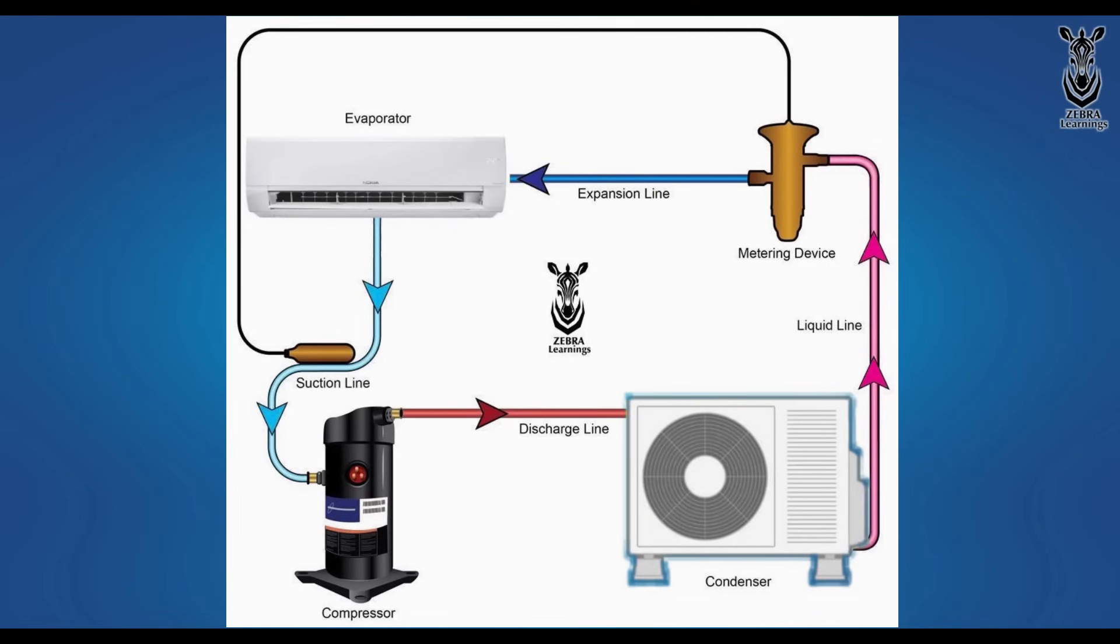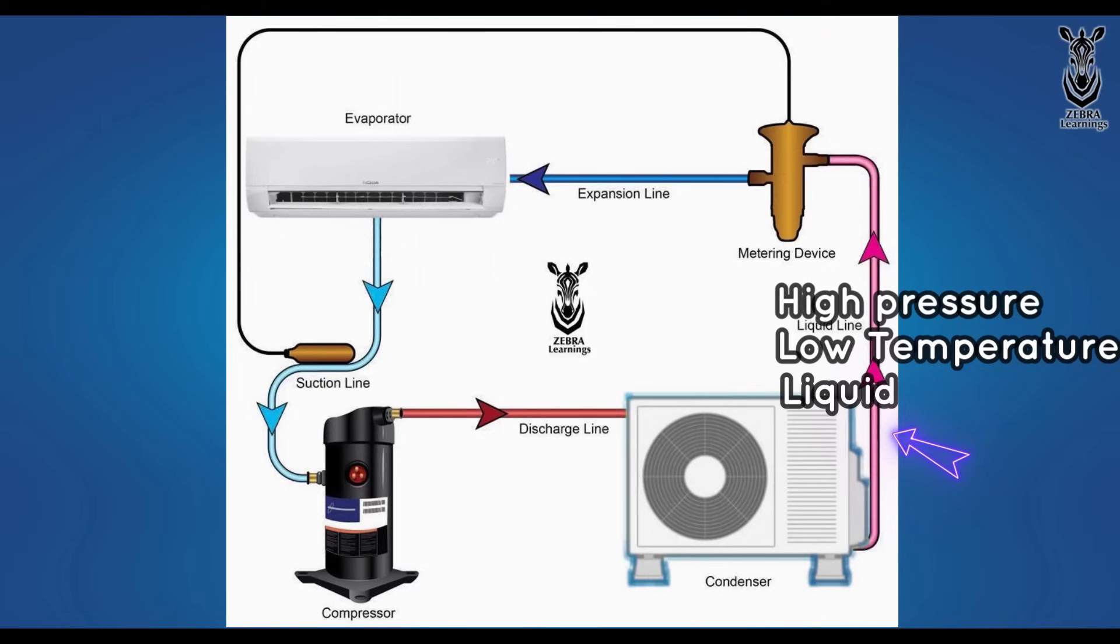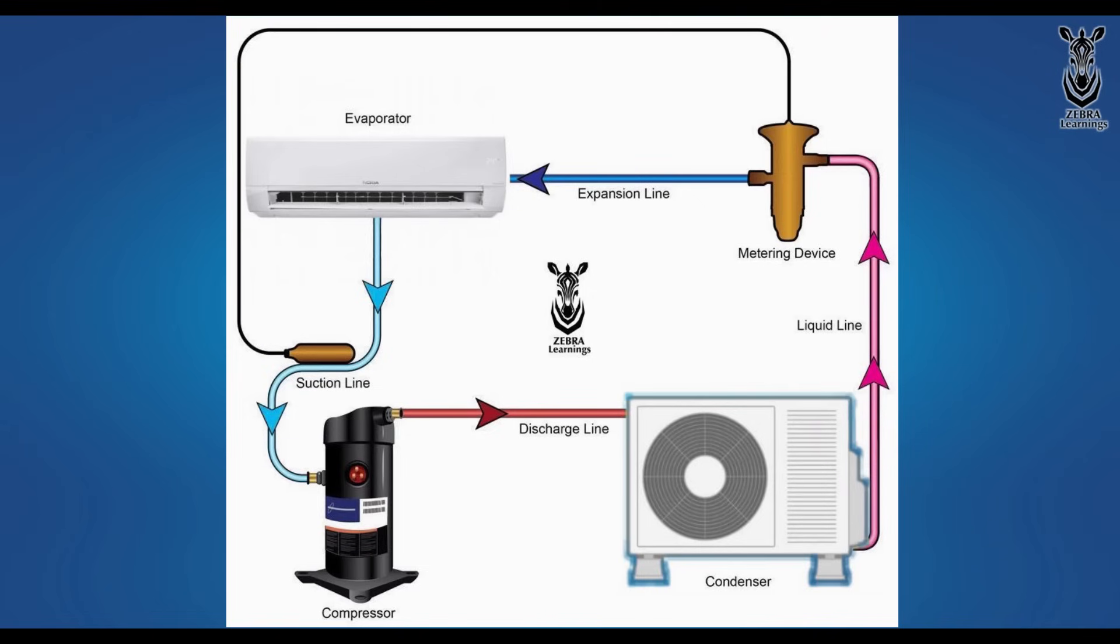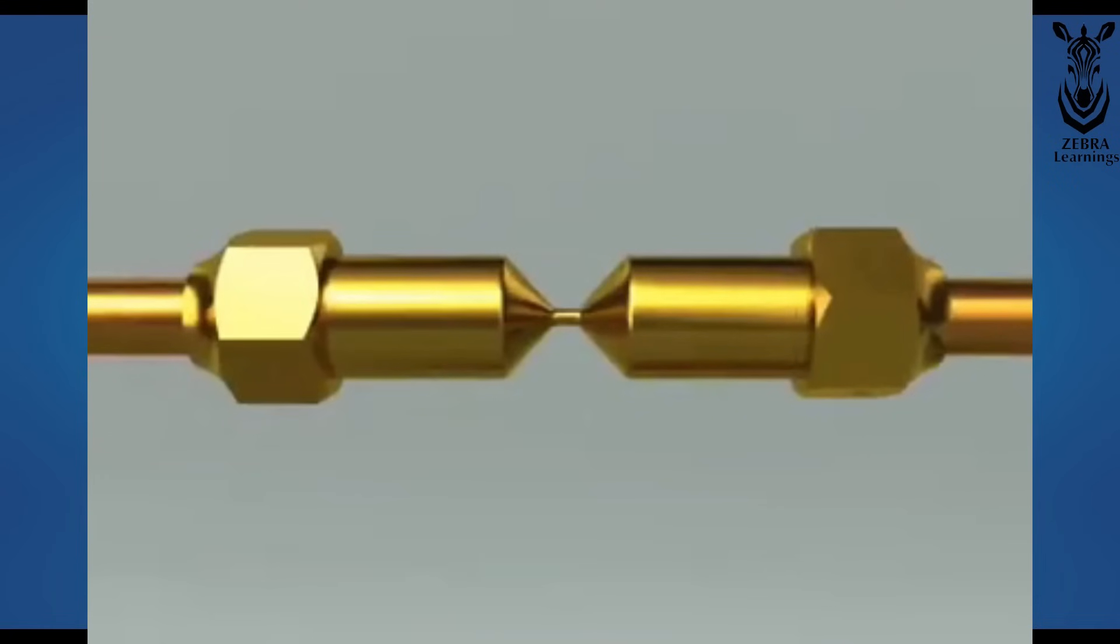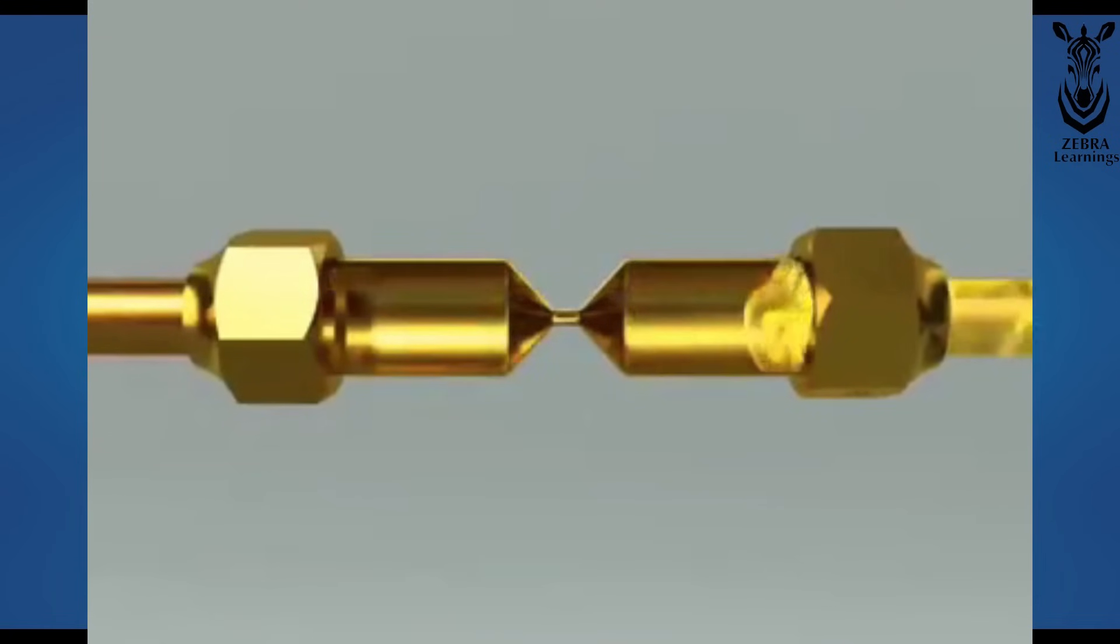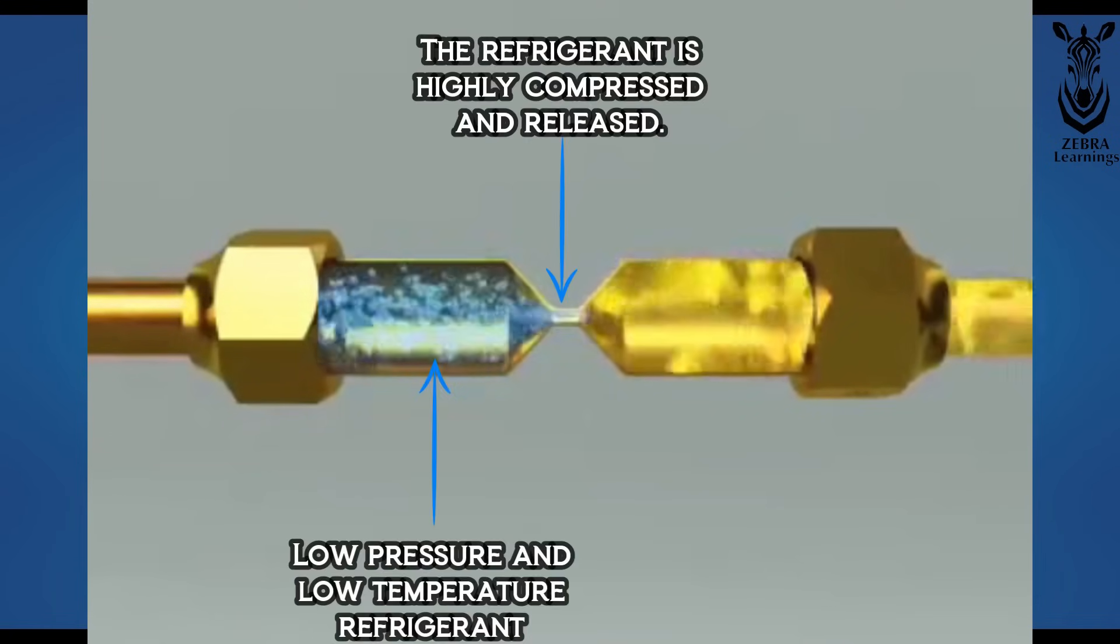Therefore, when the refrigerant comes out of the condenser, it is in high pressure, low temperature, and liquid state. Then finally, the refrigerant goes inside the expansion valve. When the refrigerant passes through the expansion valve, its pressure will decrease. Due to decrease in pressure, its temperature also decreases a lot.